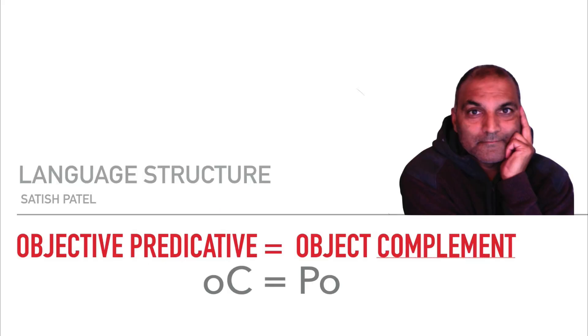So this is the difference between an object complement and a post modifier. An object complement doesn't post-modify the head — it tells us how the head has changed. I hope you've found this explanation useful.